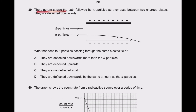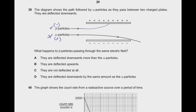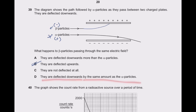Question 39: the diagram shows alpha particles passing between two charged plates — positive above and negative below. Alpha particles are positively charged; beta particles are negatively charged and much lighter. Beta particles will be attracted towards the positive plate and deflect upward. Option B is the right answer. They do not deflect downward, and they are not deflected by the same amount as alpha particles.